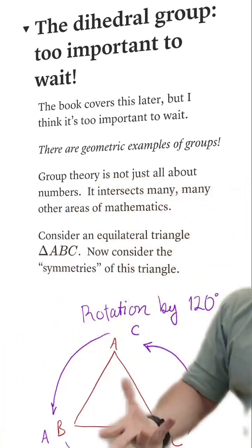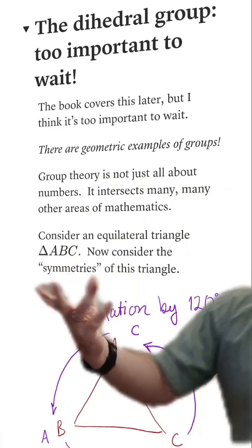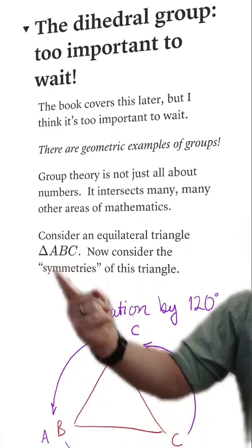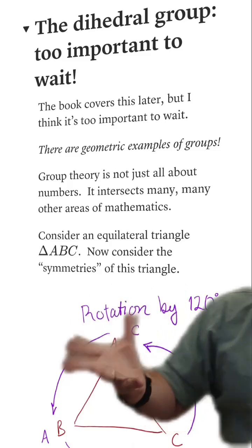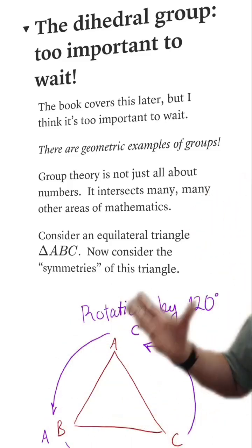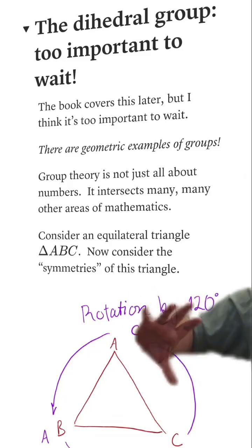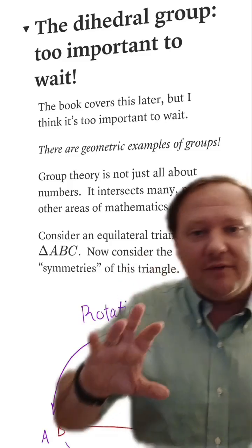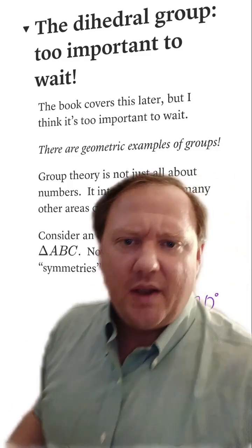We have geometric examples of groups. So to begin with, let's consider an equilateral triangle with vertices ABC and let's consider all possible symmetries of the triangle. That's going to be transformations like rotations and reflections which basically send the triangle back to the triangle.